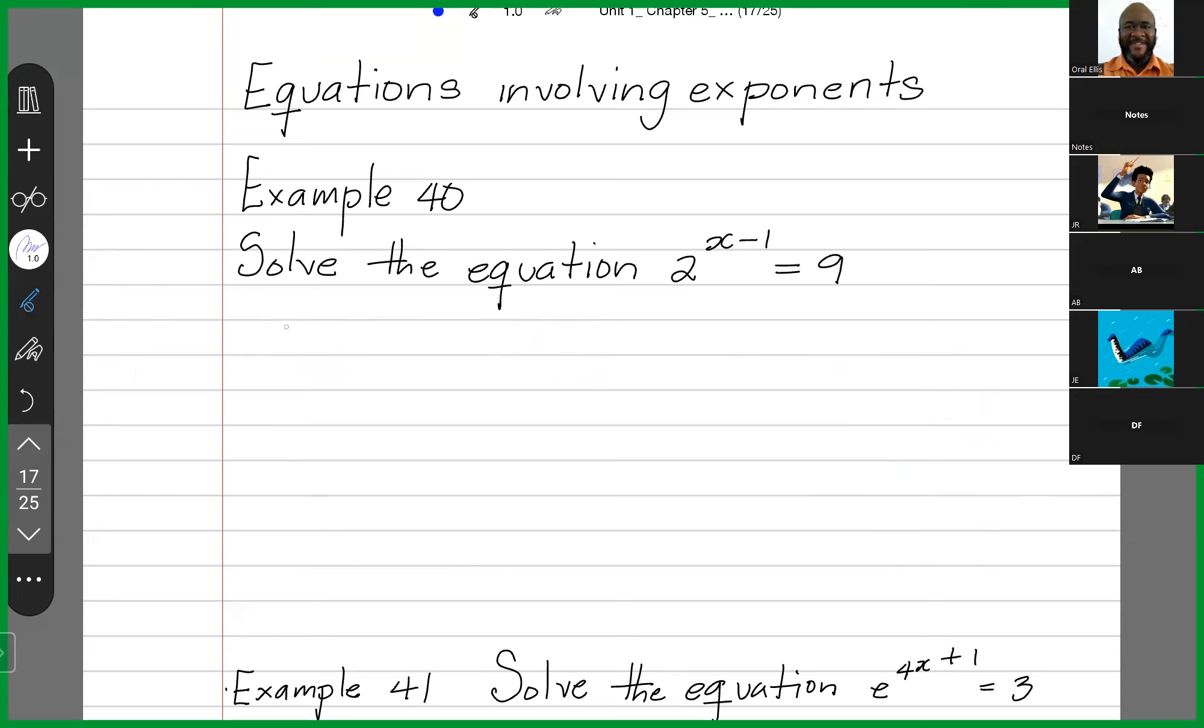So what we have now is taking log to the base 2 of both sides. Log to the base 2 of 2 to the x minus 1 is equal to log to the base 2 of 9.